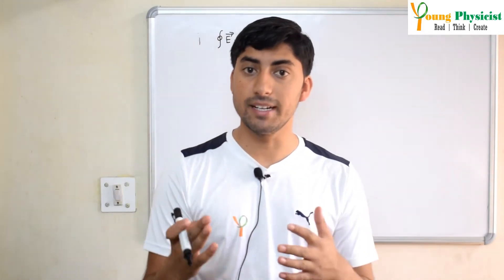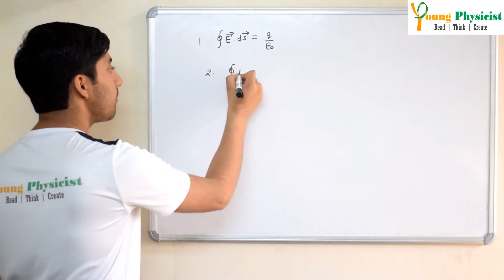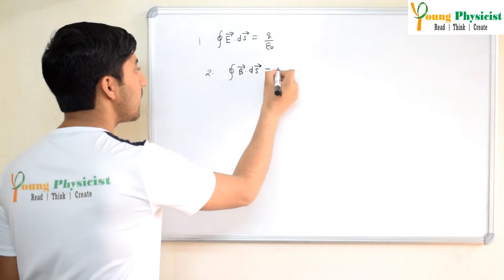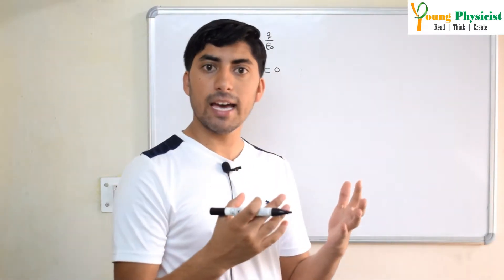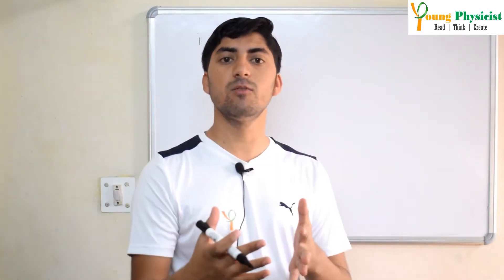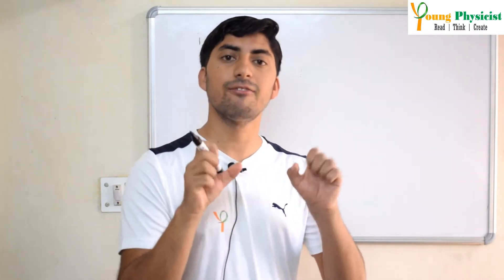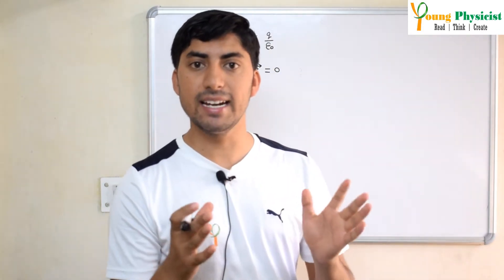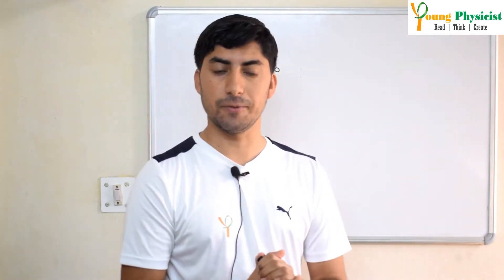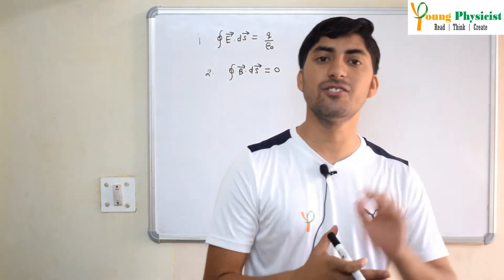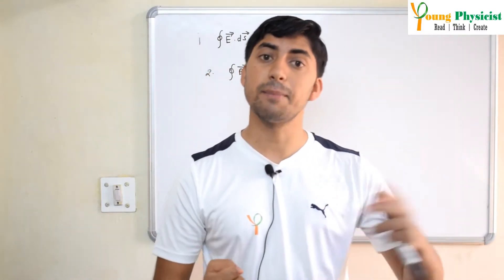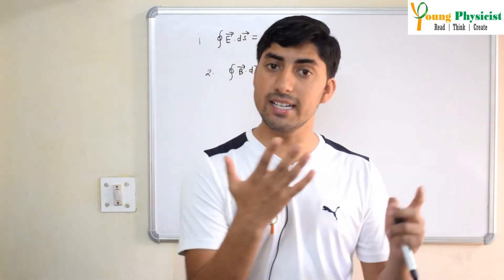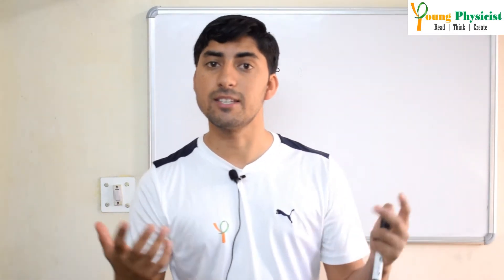The second equation is Gauss's Law in magnetism. The surface integral of the magnetic field over a closed surface is always equal to zero. This means the magnetic flux over a closed surface is always zero, because the number of magnetic field lines going inside the surface is exactly equal to those coming out. This equation is based on the fact that magnetic monopoles do not exist in nature. Unlike electric charges, you cannot have a south pole or north pole in isolation.